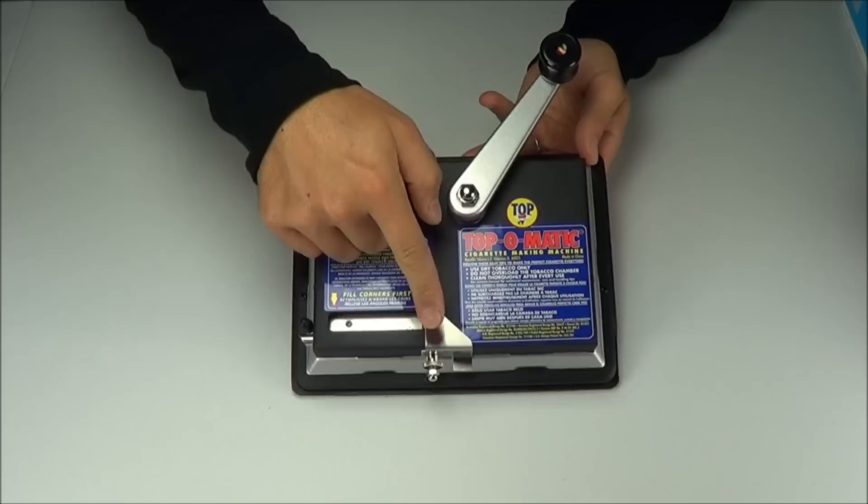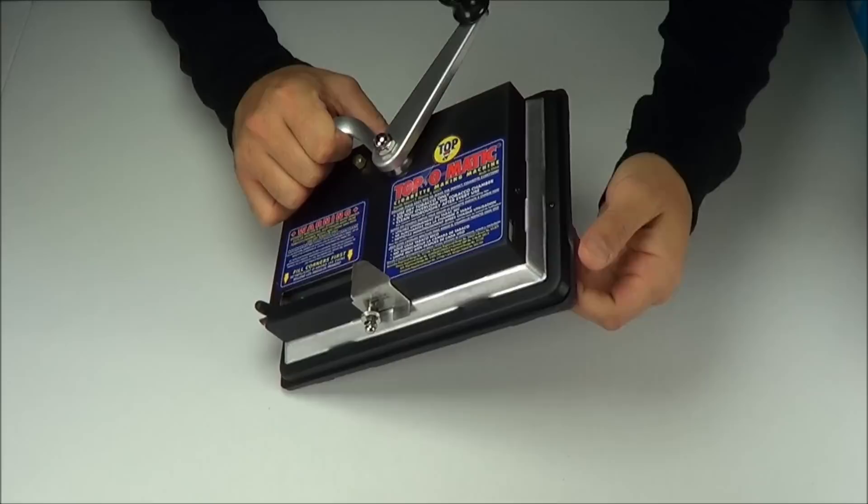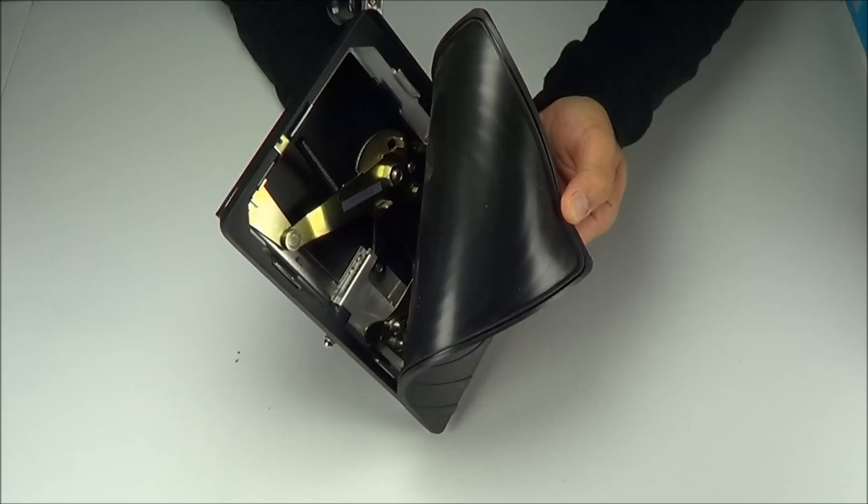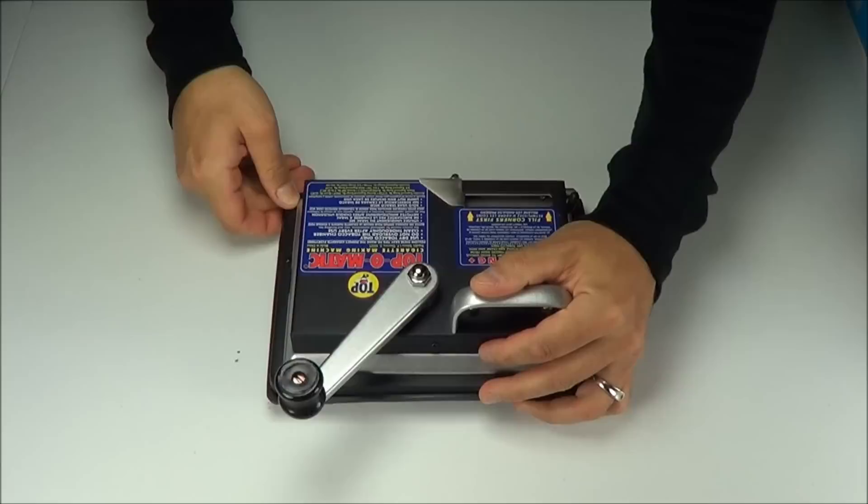This is a removable plate that when you take it off allows you to do 100 size cigarettes. It has a skid resistant bottom that comes off and reveals the gears underneath, allowing you to get in there and clean it from time to time.